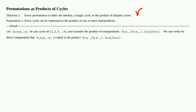Here we go with the proof. Let the cycle (a₁ a₂ ... aᵣ) be any cycle on the set {1, ..., n}, and consider that product of transpositions — I'll just refer to it as 'that product of transpositions' henceforth. We can verify by direct computation that the cycle (a₁ ... aᵣ) equals that product of transpositions, and that's what we'll do. Let's start with an analysis of what the cycle (a₁ ... aᵣ) does.